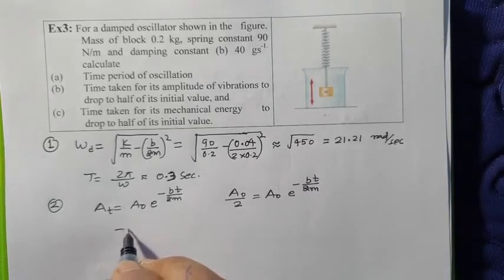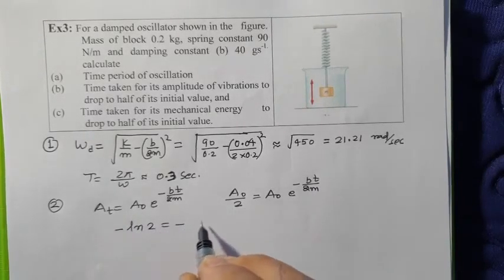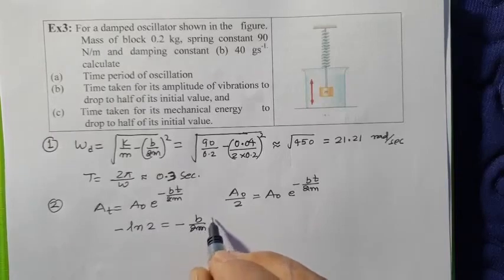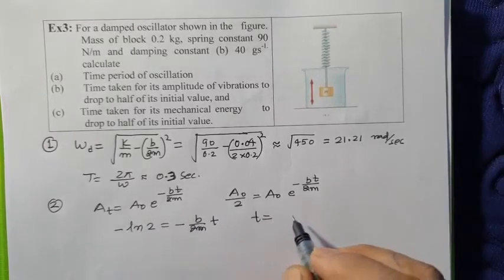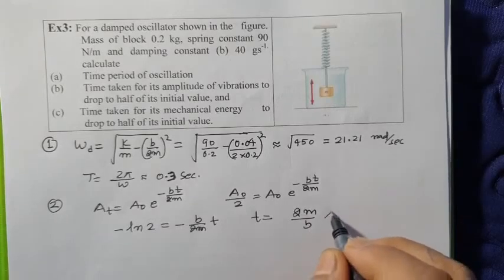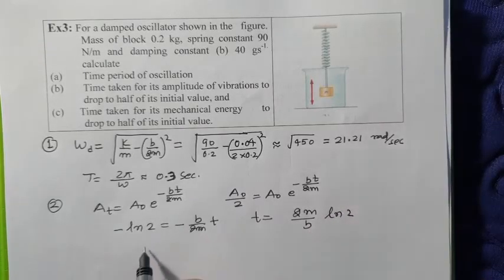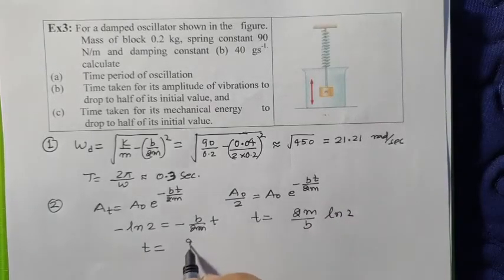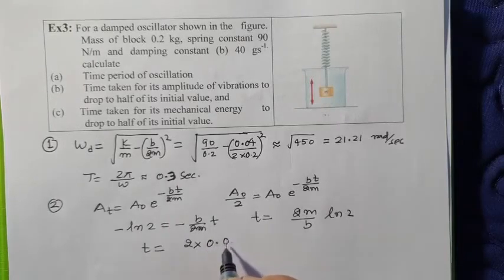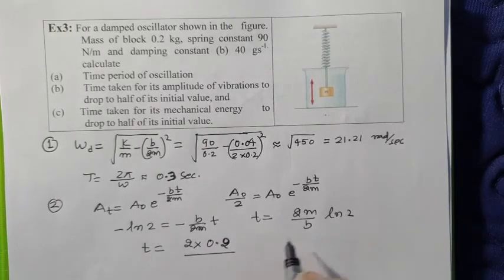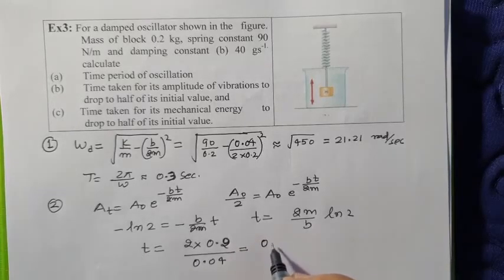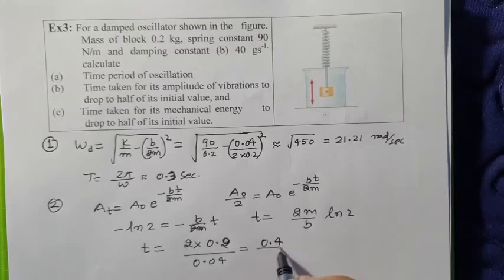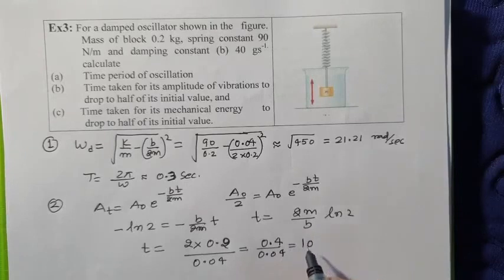That will be minus ln 2 equals minus b by 2m into t, so t comes 2m over b ln 2. This value, put 2 times mass is 0.2 and b is 0.04, so it is 0.4 over 0.04, so that is 10.